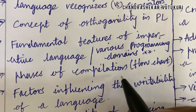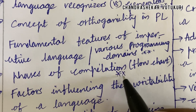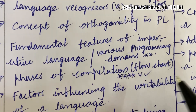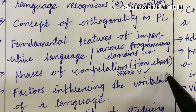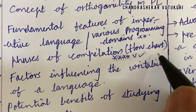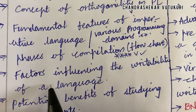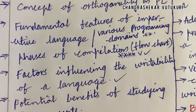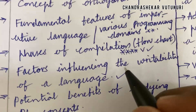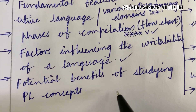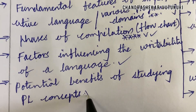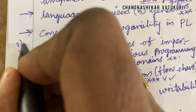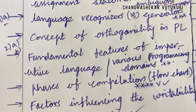Phases of compilation is said to be a short or long question, a sure-shot question, which is very important along with the flowchart. Factors that influence the writability of a language is a very good, interesting question, and the potential benefits of studying programming language concepts may also be a long question. From this part, we can expect 2A to 2B as well as 1A questions.